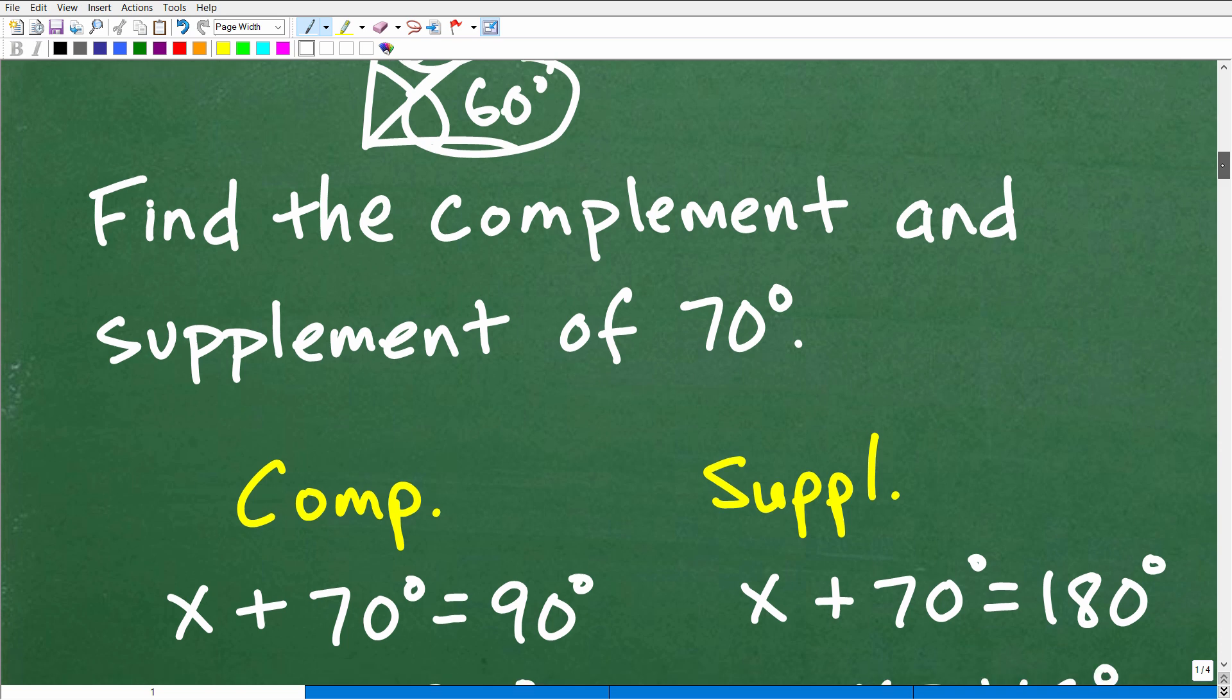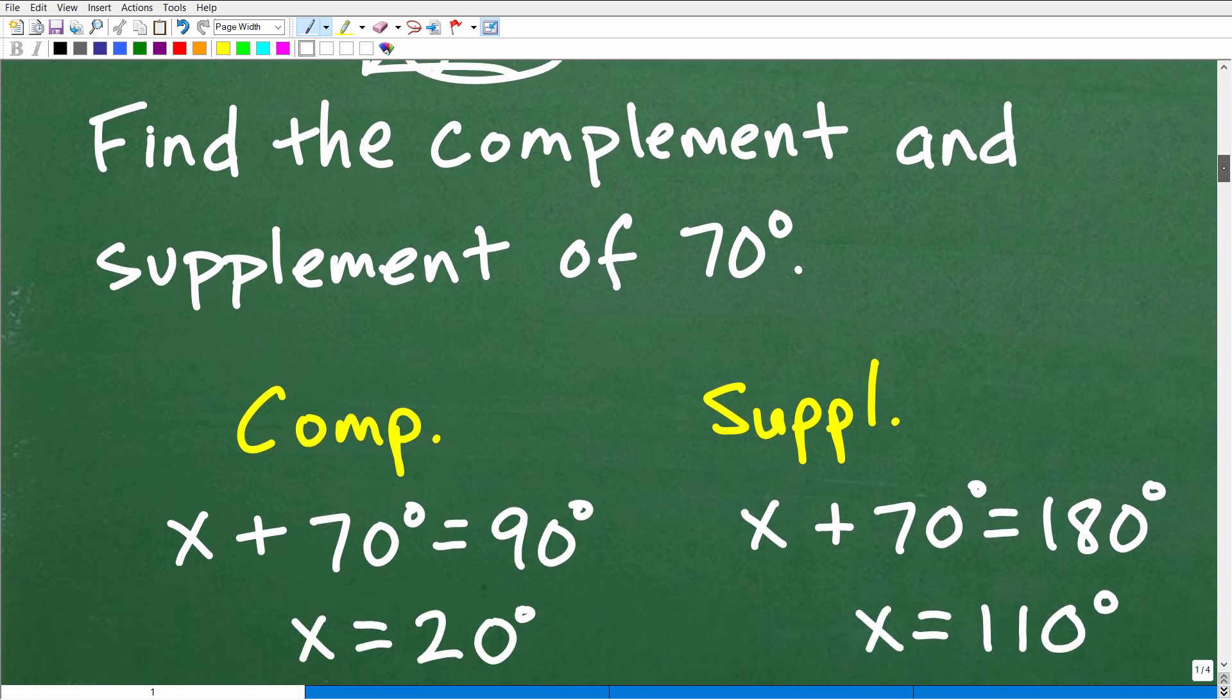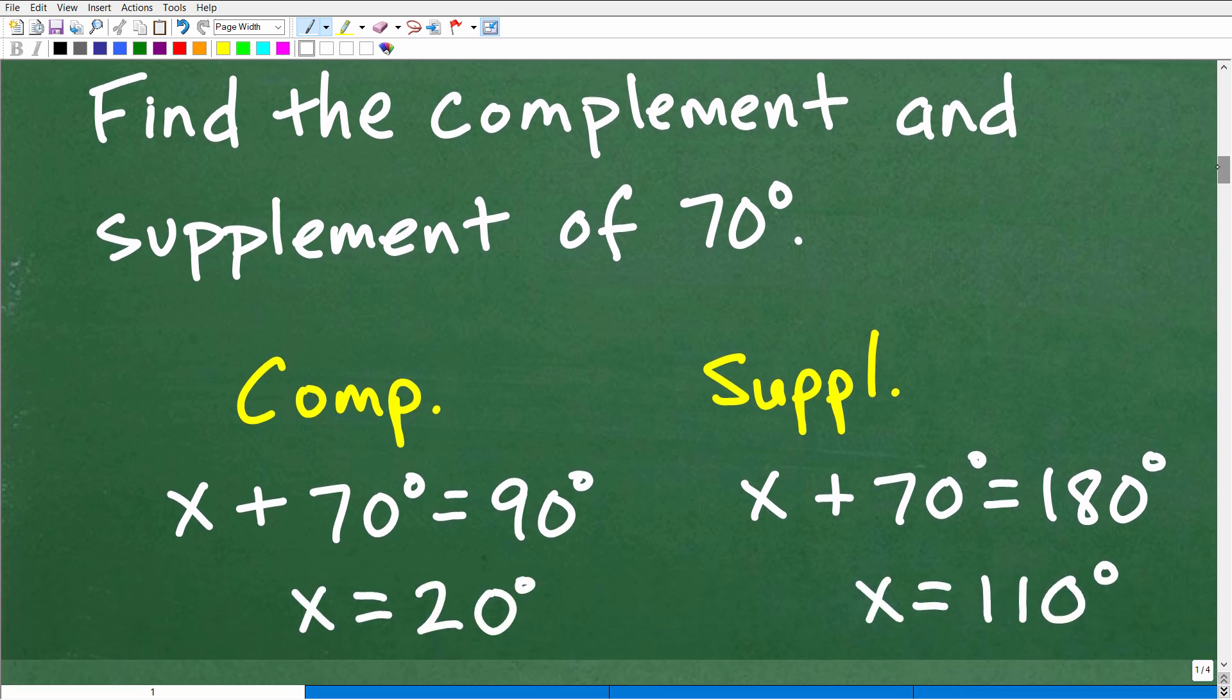All right, so now let's go ahead and just answer this question. Find the complement and supplement of 70 degrees. How do we do this? Very simple. So the complement is going to be some angle plus that angle, right? The complement plus the angle in question, 70 degrees. We know that the sum of this is going to be 90 degrees. So we can just write a real basic algebraic equation, or you could literally just take 70 degrees and subtract it away from 90 degrees. Either way, you're going to end up with 20 degrees if we solve this equation.